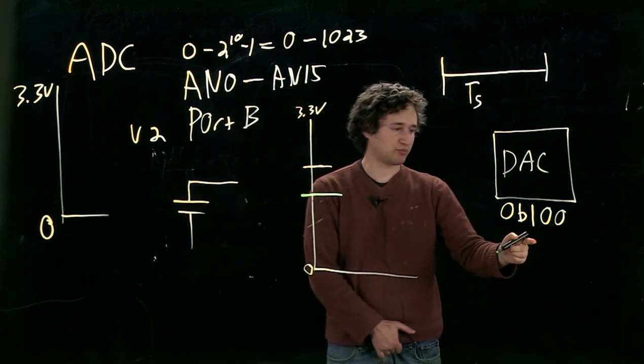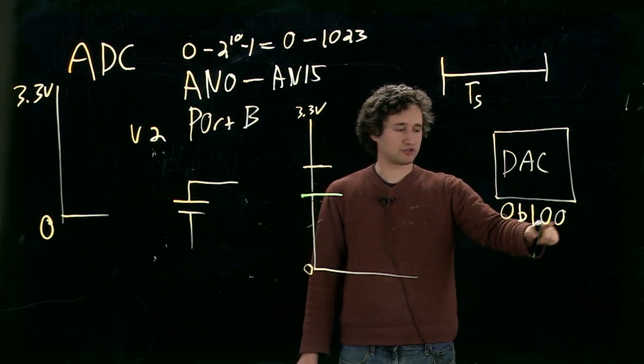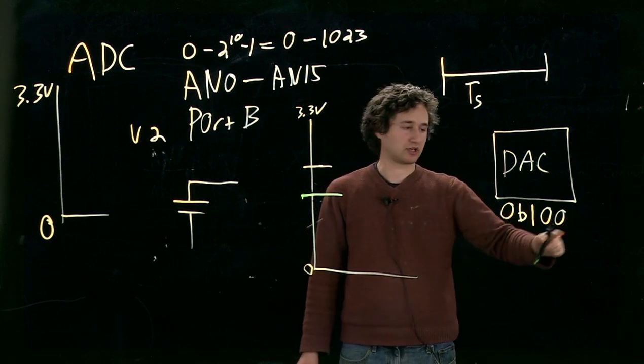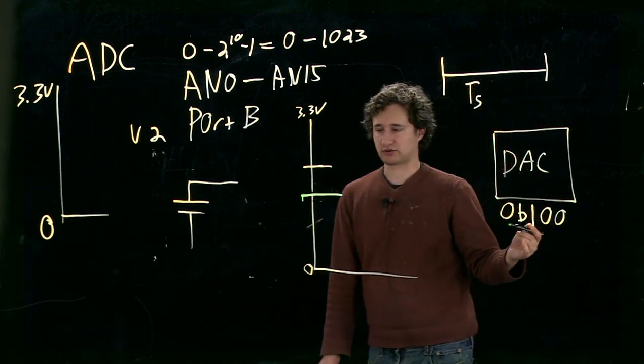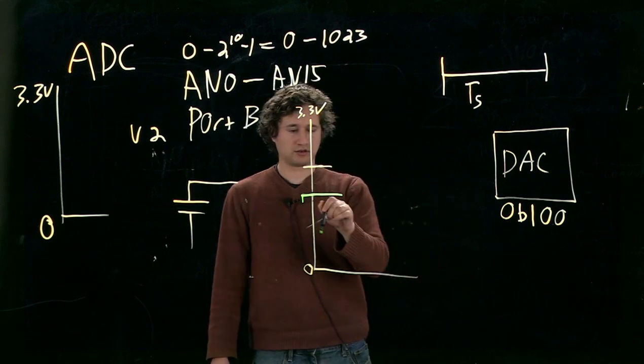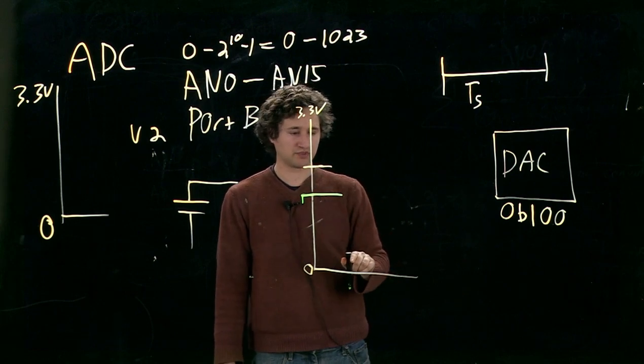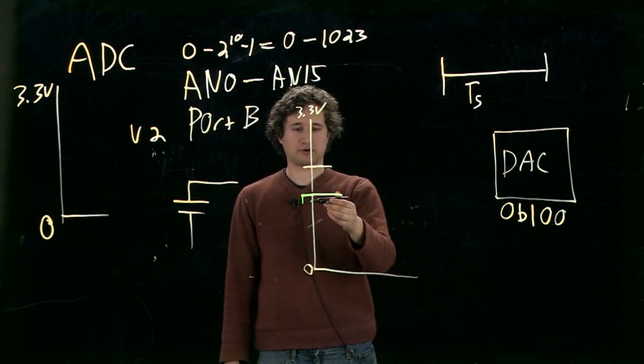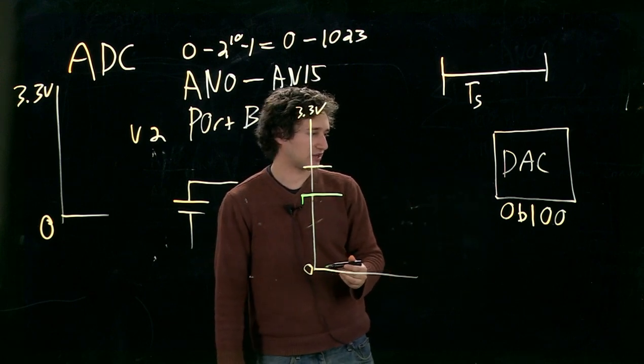So the DAC, the PIC will instruct the DAC to output binary 1, 0, 0. Or in the case of the actual PIC, there'll be 9 zeros after the one, but we're just doing 3 here. And then, this voltage will be compared to the voltage on that holding capacitor. In this case, the voltage that we've output is lower than the voltage on the holding capacitor.